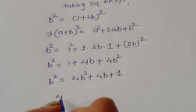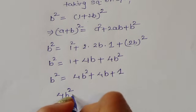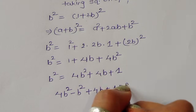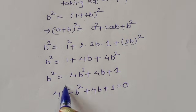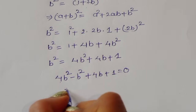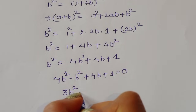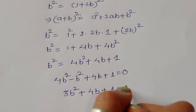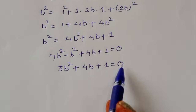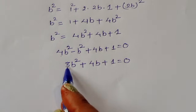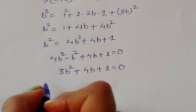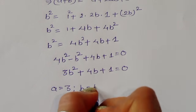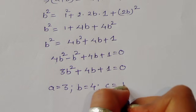Rearranging: 4b squared minus b squared gives 3b squared, so we get 3b squared plus 4b plus 1 equal to zero. Now in equation form, the coefficients are: a = 3, b = 4, and c = 1.